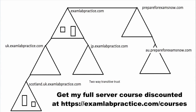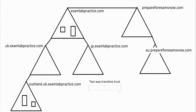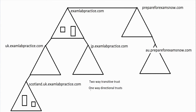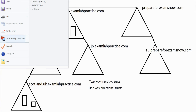Another option you can configure is known as a one-way directional trust. A one-way directional trust is only going to go one direction — it is not going to go both directions.